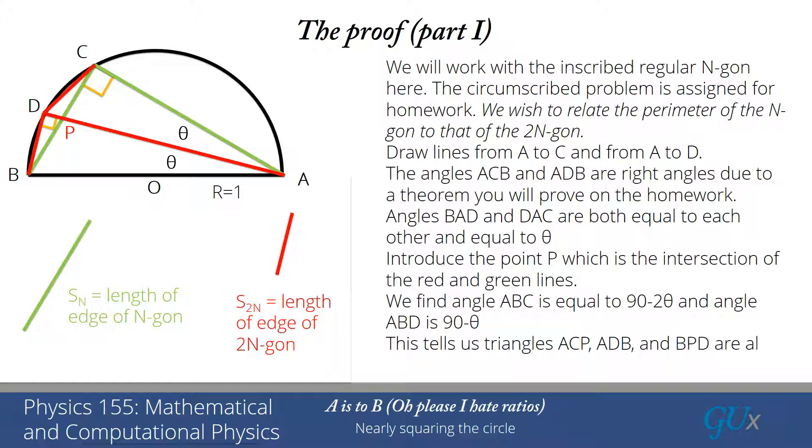We can work out the angle for the triangle ABC. That angle ABC is equal to 90 degrees minus 2 theta, because it's a right triangle with an acute angle that's equal to 2 theta. And the angle ABD is equal to 90 degrees minus theta, because that is a right triangle with an acute angle of theta. What this means is the angle DBP is also equal to theta. And that's going to become very important in just a second. So what we find is there are three triangles, ACP, ADB, and BPD, that are all right triangles with an acute angle theta. So they're all similar triangles.